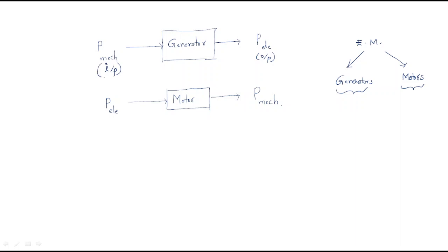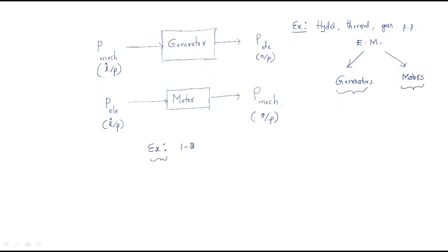Examples of generators include hydel, thermal, and gas power plants — all power plants are essentially generators. The motor is the reverse operation of a generator: it takes electrical input and generates mechanical power as output. Examples of motors include single-phase induction motors, such as our ceiling fans, and many other induction motor applications.